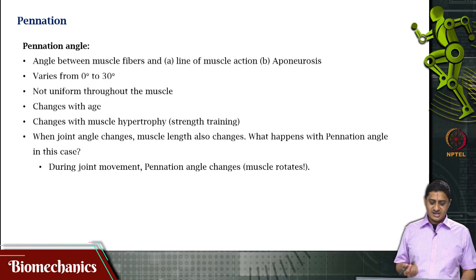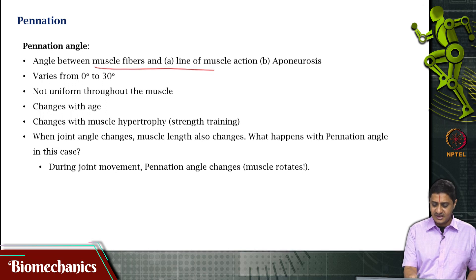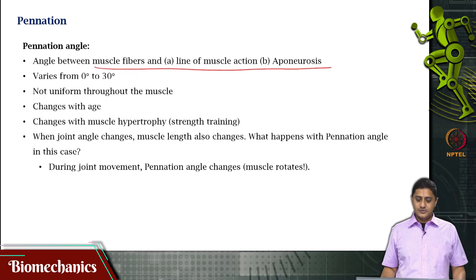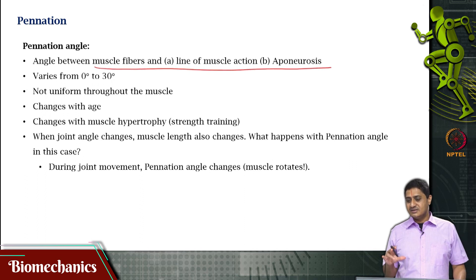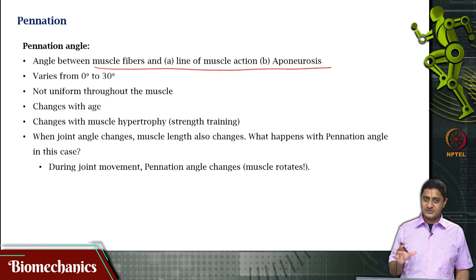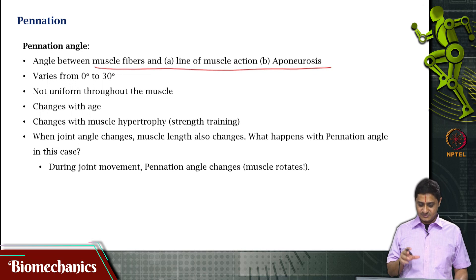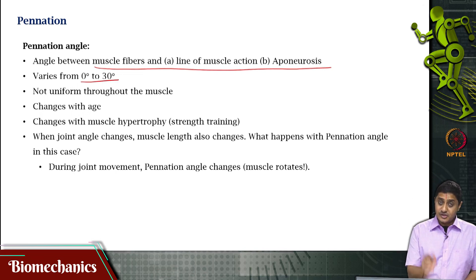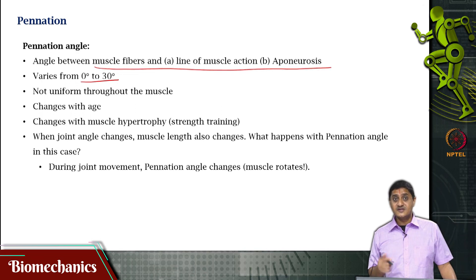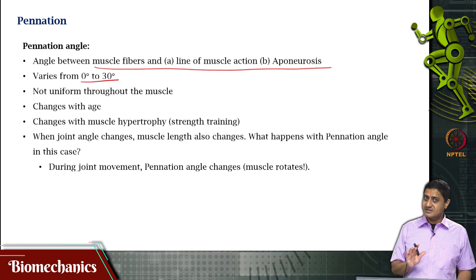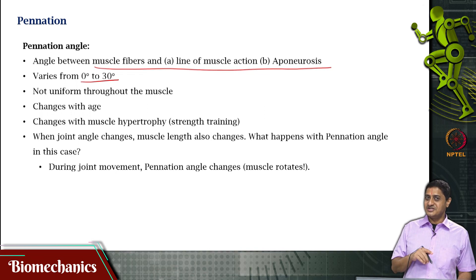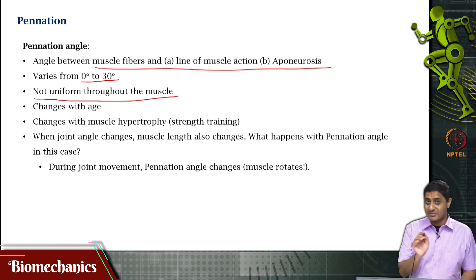The pennation angle is the angle between the muscle fiber and the line of muscle action, or the aponeurosis. Sometimes there may be no alignment between the line of muscle action and the aponeurosis — the external and internal tendons may not be aligned. The pennation angle goes only between 0 and 30 degrees, which is itself a relatively large range. Note that in the previous discussion, I assumed all fibers have the same pennation angle, which is not uniformly true throughout the muscle.